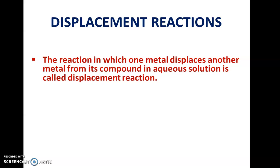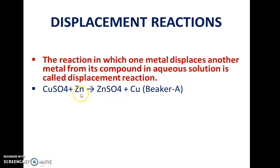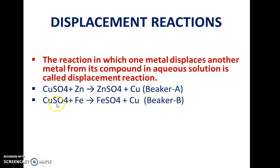In beaker A: copper sulfate (CuSO₄) and zinc — zinc displaces copper, giving zinc sulfate (ZnSO₄) plus copper. In beaker B: copper sulfate solution with iron — iron takes the place of copper, and copper takes the place of iron. Displacement reaction takes place in beaker B as well.